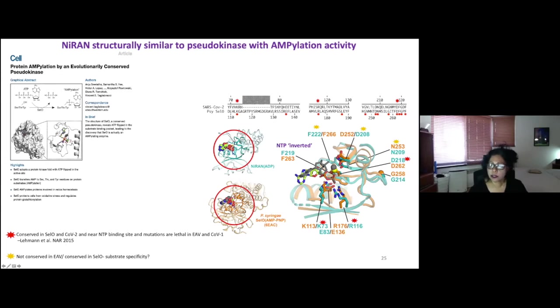Gorbalenya's group, they actually mutated these amino acids. And when they do that, the virus can't, it's crippled in replication. So they basically show the NiRAN was important, essential for good viral replication.